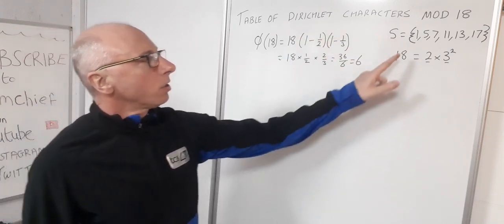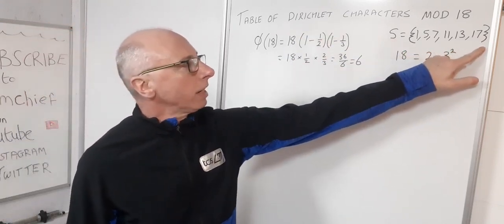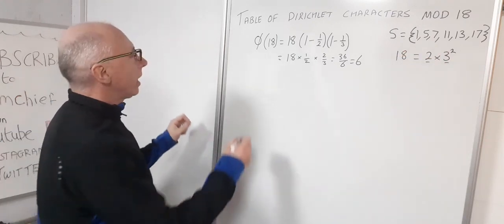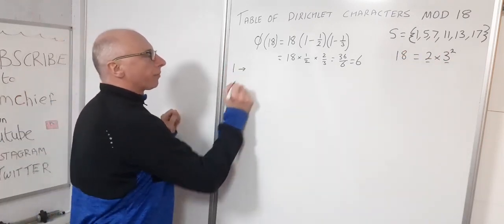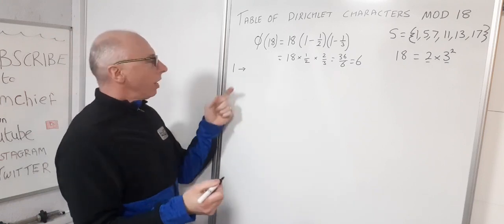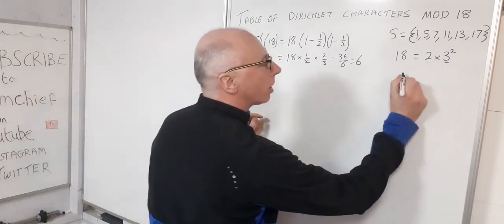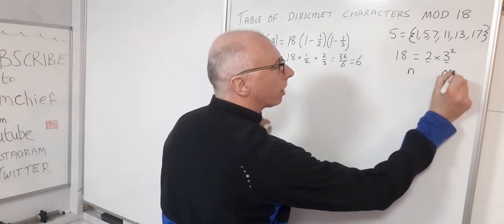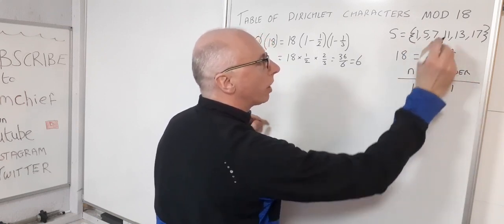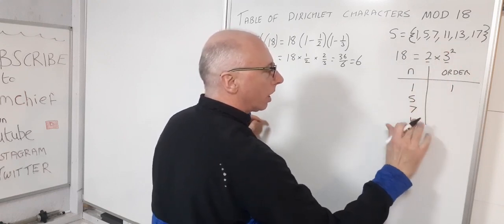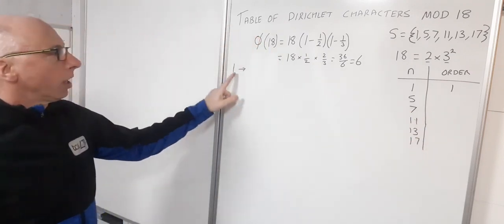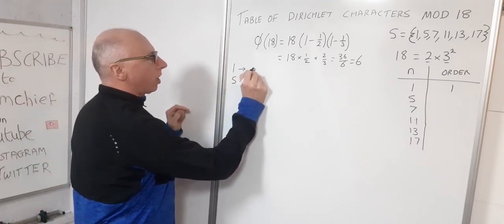Now we need to work out the order of each element of this set and find out which are the generators. Let's test 1 first: 1 to the power of 1 is 1, and 1 to any power is always 1, so this element is always of order 1. I'll draw a little table with n and the order, and 1 is of order 1.